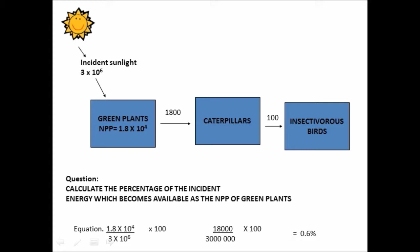Let's stick with the same food web or food chain and just do a different calculation. This time, let's calculate the percentage of the incident energy which becomes available to insectivorous birds. So instead of NPP, we're using insectivorous birds. So again, what we do this time, calculate the percentage of incident energy. That's 100, which becomes available to 3 by 10 to the 6, 3 million, times 100. And that gives us 0.003%.